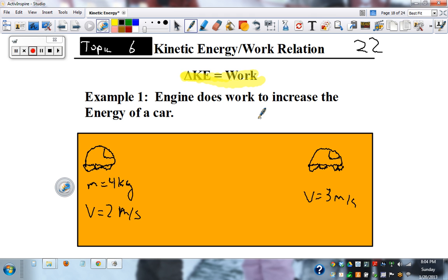So I might ask you, how much work is done in this example? Now we remember that work equals force times distance. But we don't know force and we don't know distance. But if we know how much kinetic energy changes, then we can solve for work. So let's grab a different color.